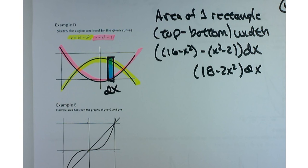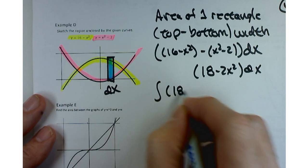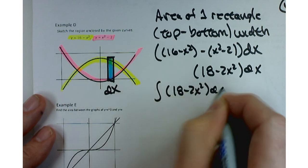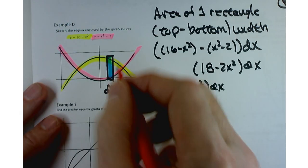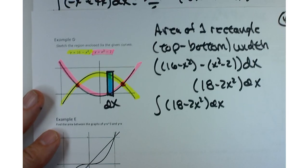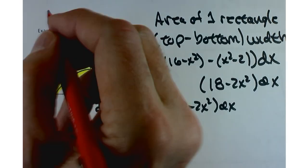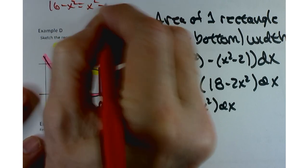Looking good there. Let's set up an integral. So it's going to be an integral of 18 minus 2x squared dx. Of course, we need to figure out the limits of integration. How are we going to figure out the limits of integration? This graph isn't marked. How do I know where these things cross each other?